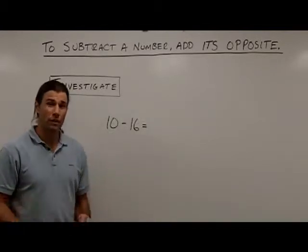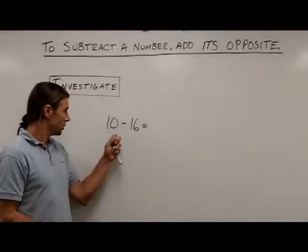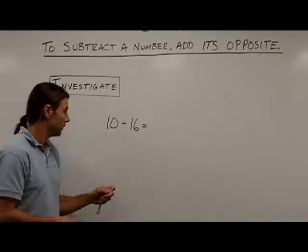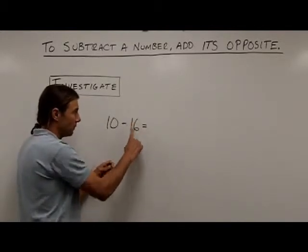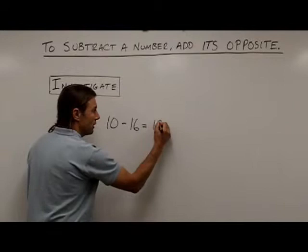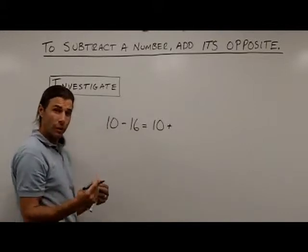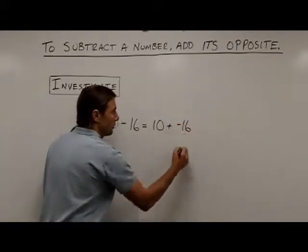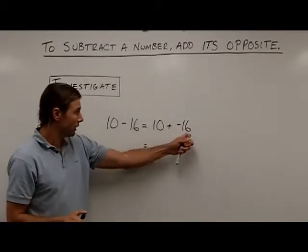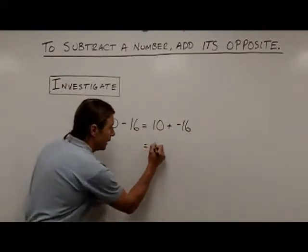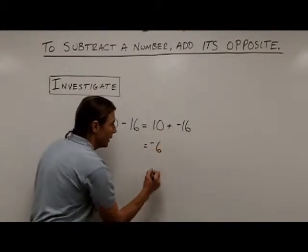Here's a subtraction problem that we're not used to doing. We're starting with 10 things and we're trying to take 16 things away — this is something we're not used to. But let's make this transition, changing this from a subtraction problem to an addition problem. I'm subtracting 16, so when I make this transition, I want to add 16's opposite. So 10 stays the same, subtraction changes to addition, and positive 16 changes to its opposite, negative 16. Now I have 10 positives and 16 negatives. I have more negatives, so I'm going to have a negative answer — 6 more negatives — so my answer will be negative 6.